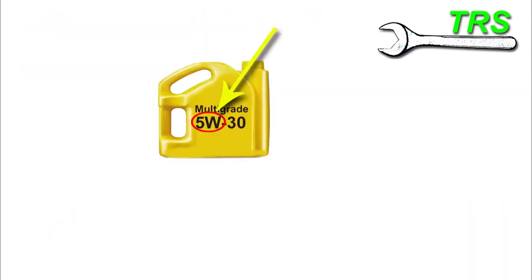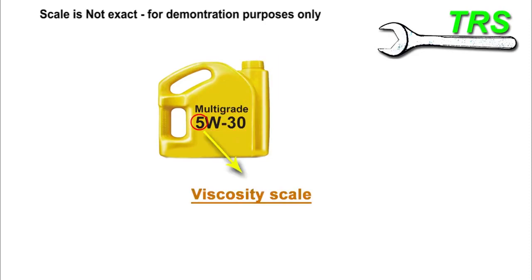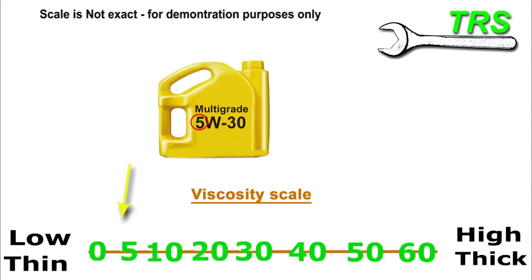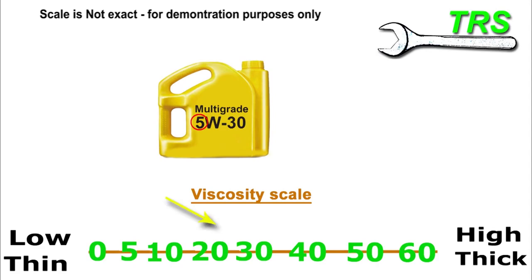So let's take a closer look at these numbers. We've got the 5W and we've got the 30. Starting with the 5, I shall use a viscosity scale and we'll add some numbers here for the scale. As we can see, the 5 is here, representing a thin viscosity of oil. The lower the number, the thinner the viscosity, and moving up the scale we get higher numbers and thicker viscosities.